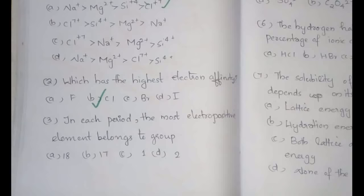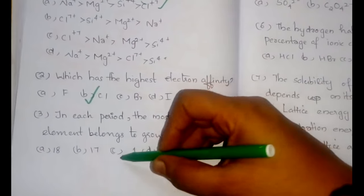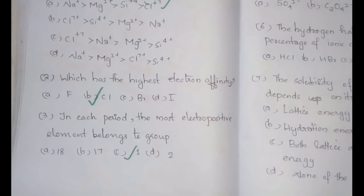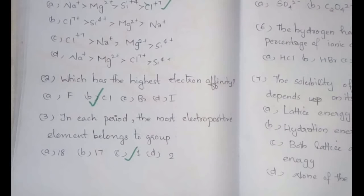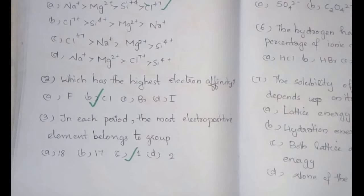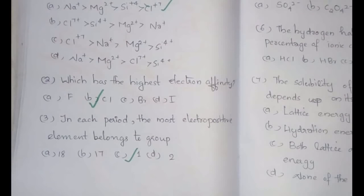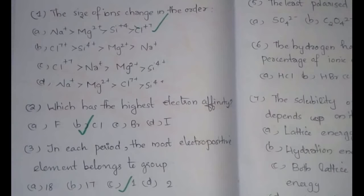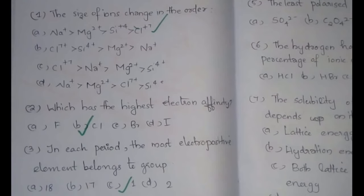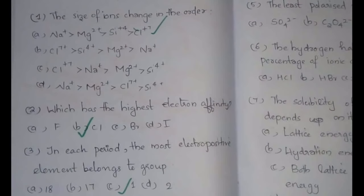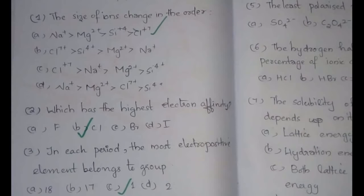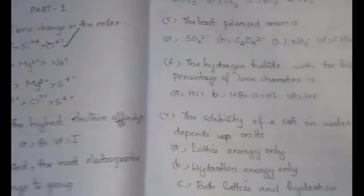The third question: in each period, the most electropositive element belongs to which group? The answer is C — the first group. The electropositivity decreases across the period from left to right; please keep that in mind.